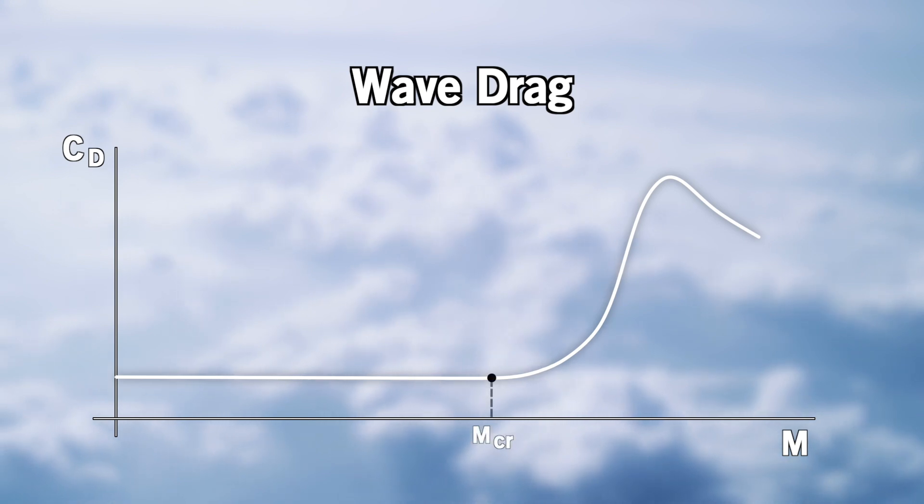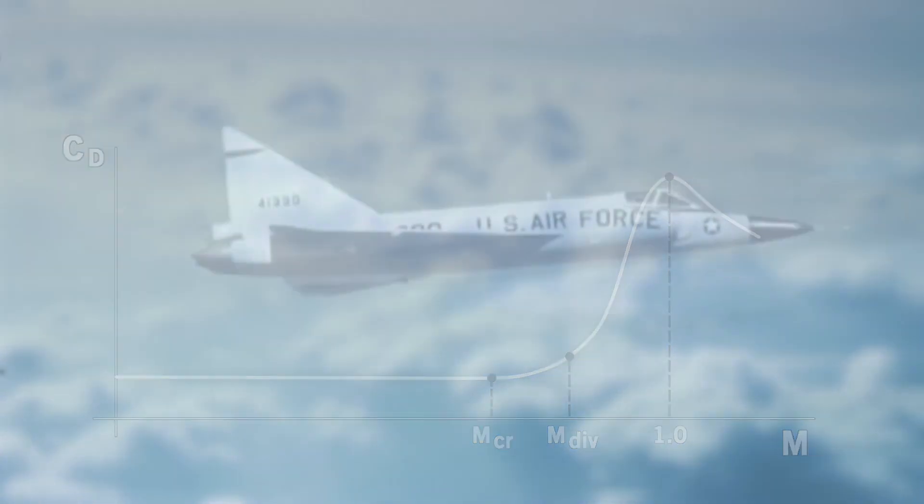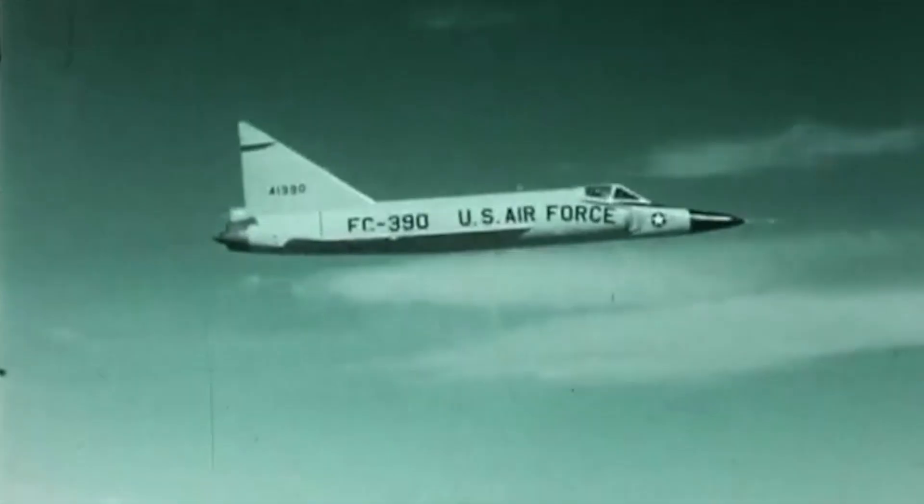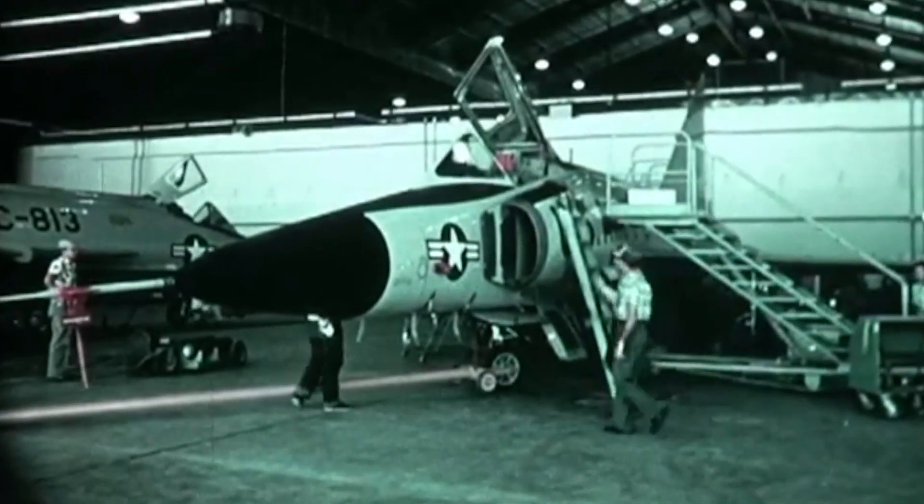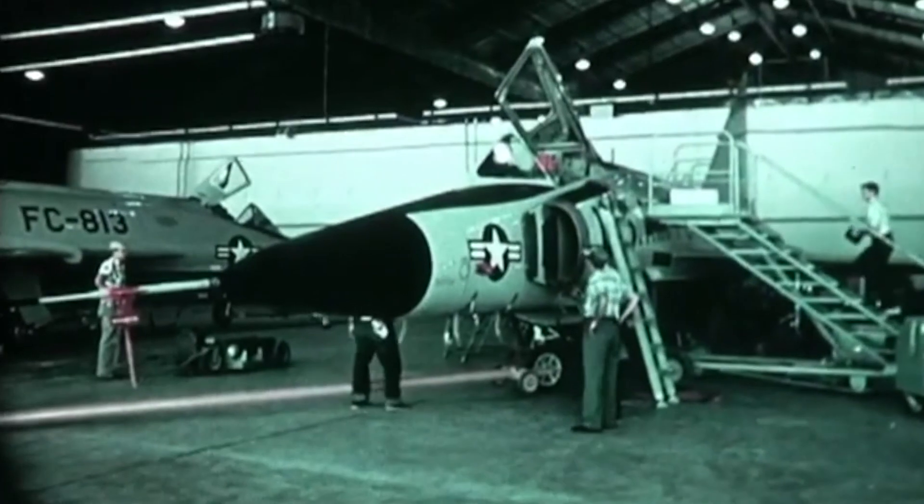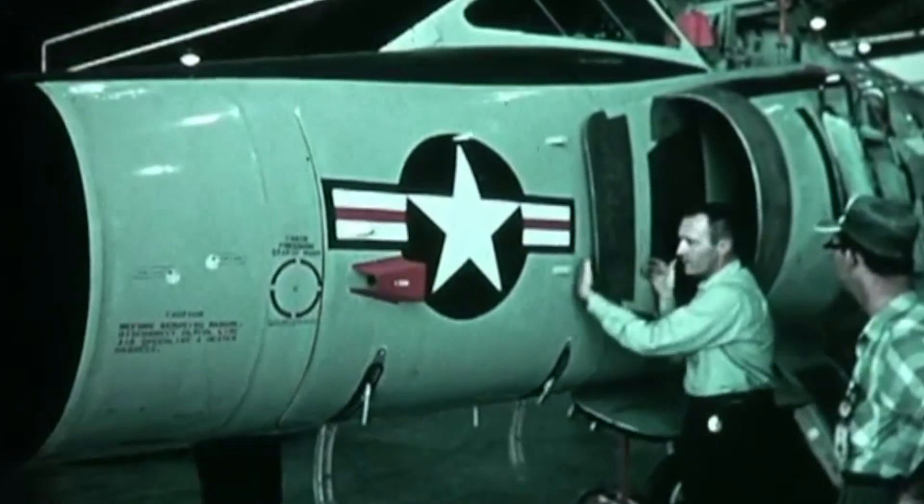Here is the critical Mach number. If we continue to accelerate, we reach the divergence Mach number, where the coefficient drastically increases, until it reaches the sound barrier. This was the reason why the F-102 could not reach supersonic speeds. The engineers of the time knew about the existence of shockwaves and wave drag, but did not know what their value depended on.